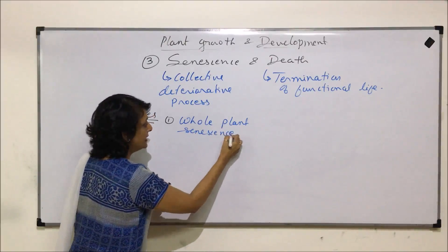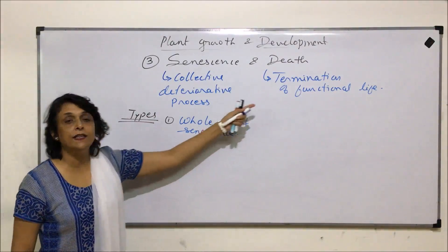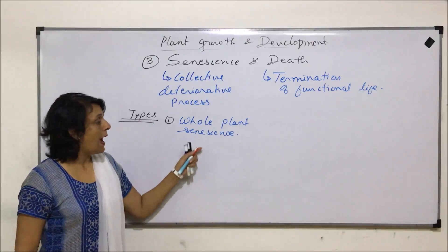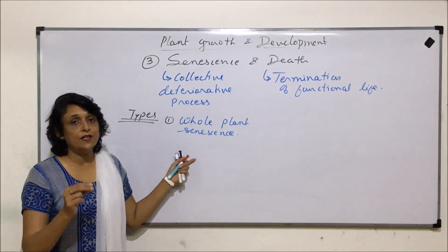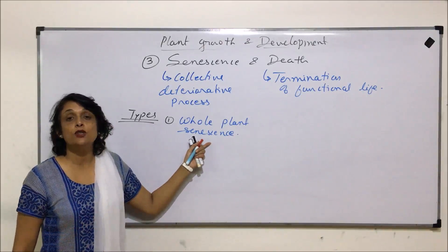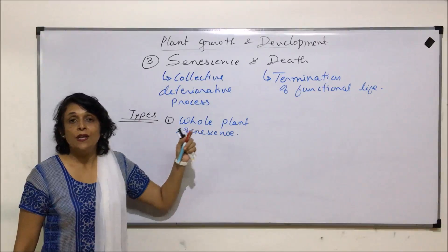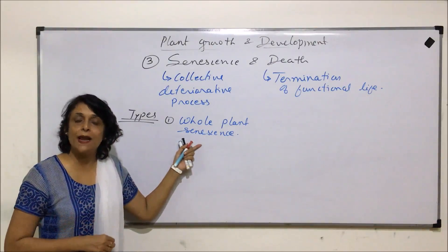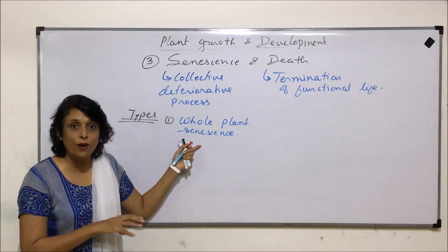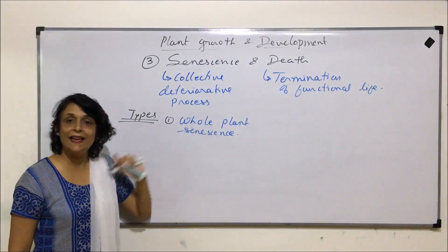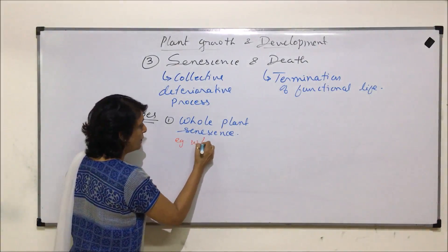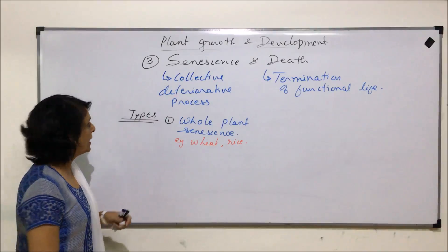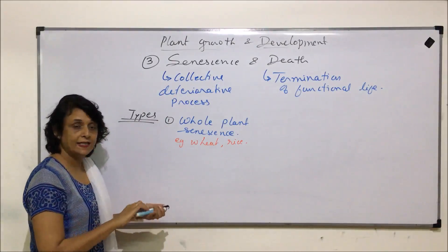In whole plant senescence, the entire plant undergoes aging and then finally dies. This is seen in the case of crop plants like wheat and rice. After the grains are sown, first there is germination, then the plant shows vegetative growth, then it produces flowers and grains are formed, and after that the entire plant undergoes aging — yellowing of leaves and the stem — and then dies.